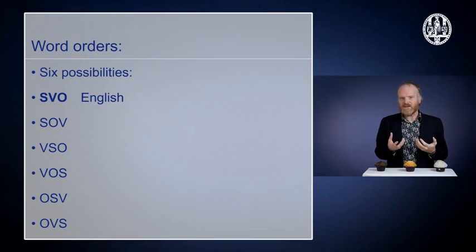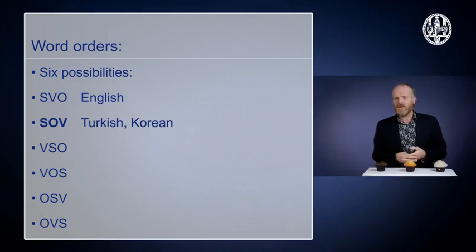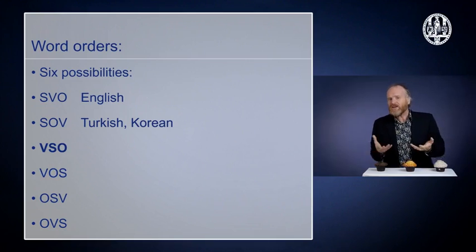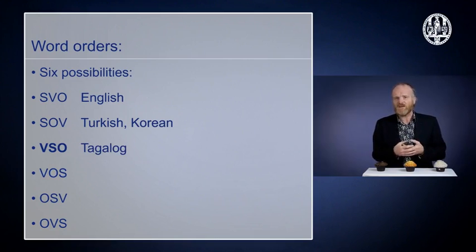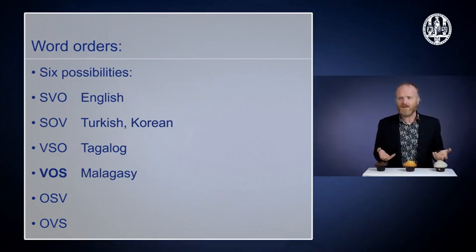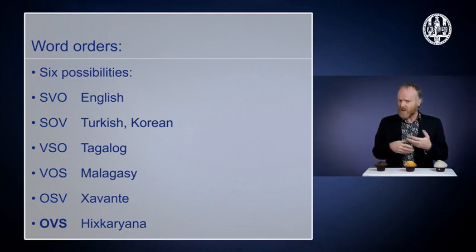S-V-O has the subject in the first position. The other way to have the subject first is S-O-V; quite a lot of languages have that — Turkish is a big language with that order, and Korean is another. V-S-O and V-O-S are the two orders where the verb comes first, and we find them in very different kinds of languages: V-S-O in Tagalog, one of the official languages of the Philippines, and V-O-S in Malagasy, a language of Madagascar. Finally, we can put the object first, giving O-S-V or O-V-S — Xavante and Hixkaryana, two Native American languages, are examples of such systems.